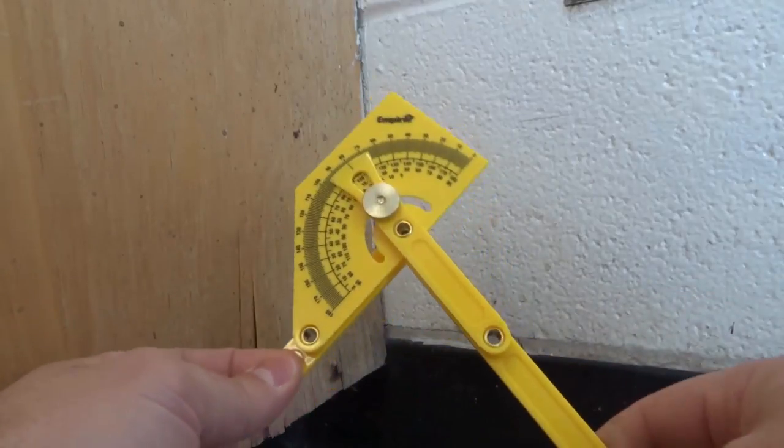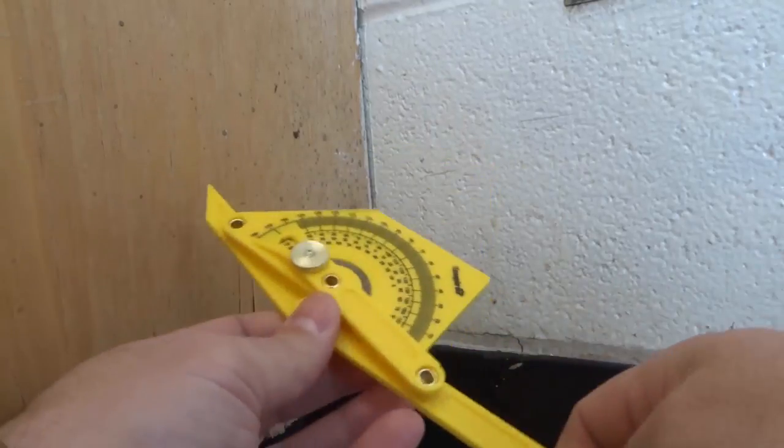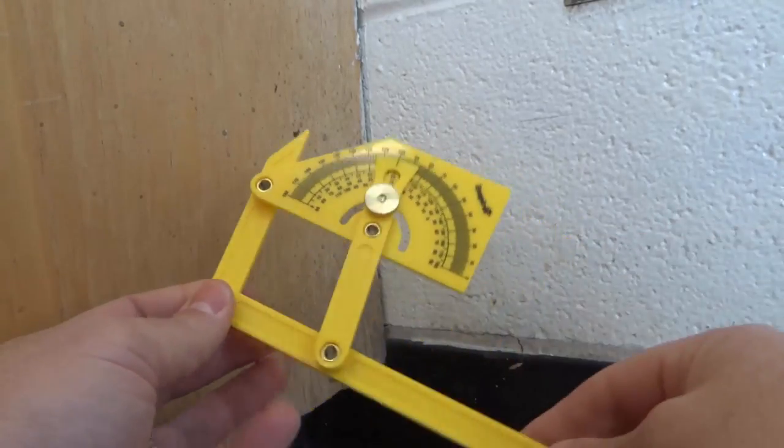You can simply move it around like that and this is how you would use it to measure outside angles and then this is how you would use it to measure inside angles.